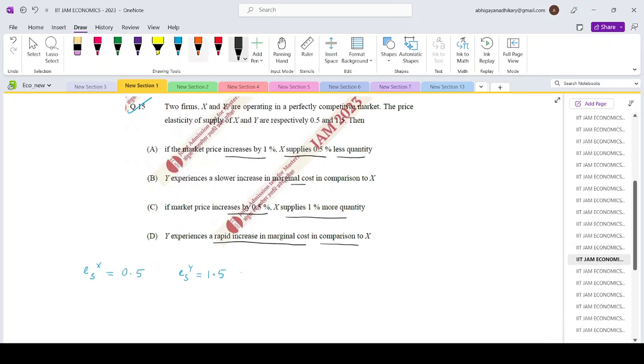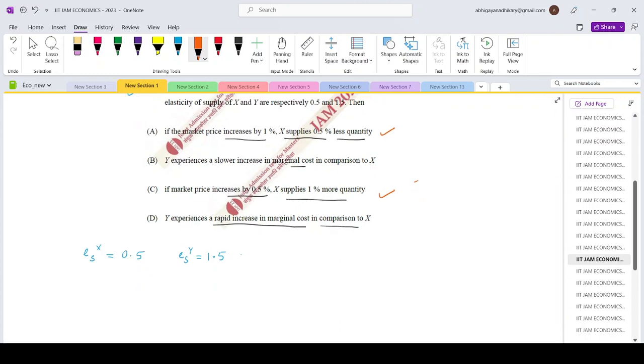So let us check with option A and C first because that can be directly checked by using the expression for the elasticity. So the definition of elasticity is percentage change in quantity supplied of X divided by percentage change in price, right? That is given to be 0.5.